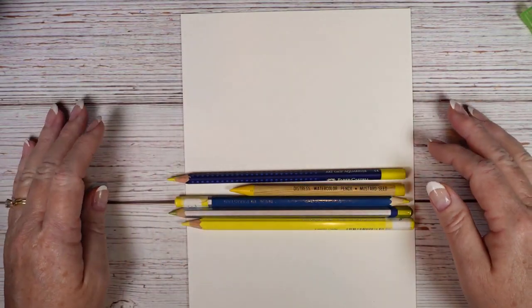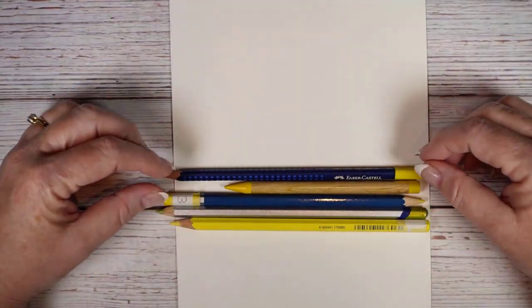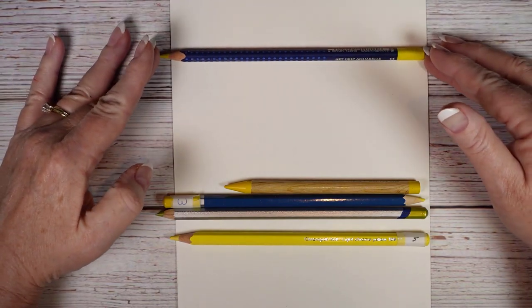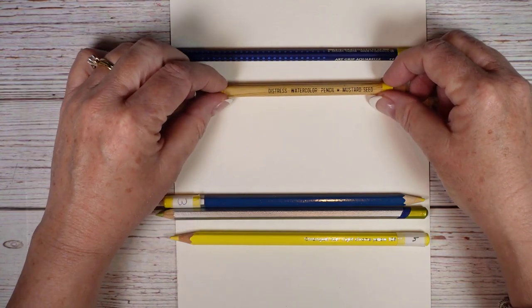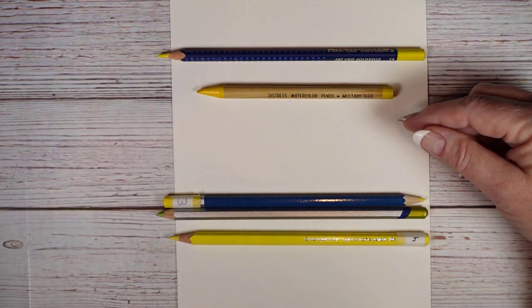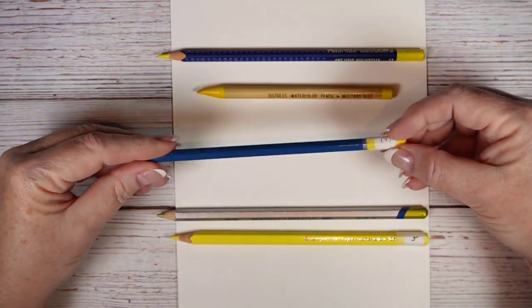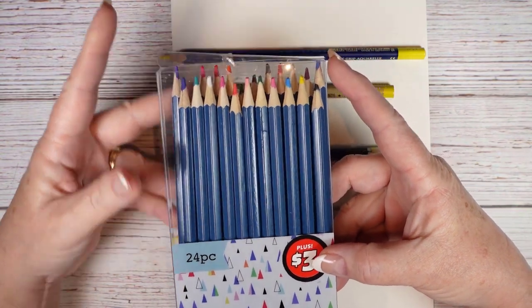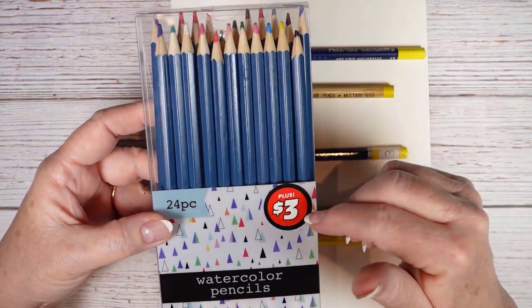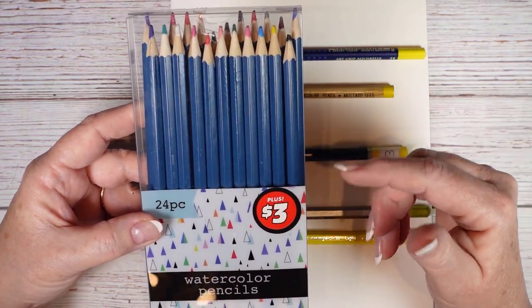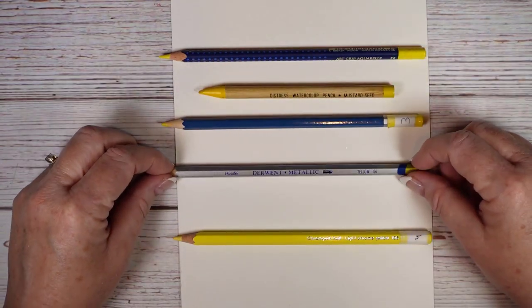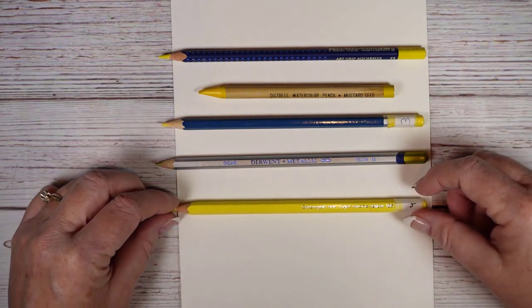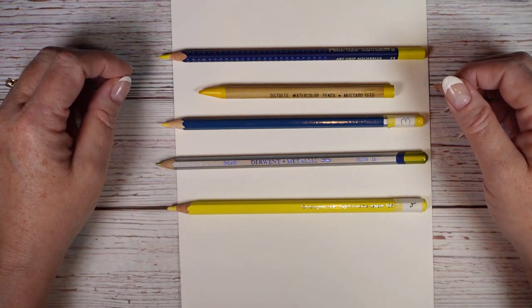First off I just have a few different colored pencils here. I have Faber-Castell's Aqua Grip Aquarelle, which is I believe their student grade watercolor pencil, I have Distress Watercolor Pencil in Mustard Seed from the Ranger Tim Holtz line. These are made in Pakistan and they are simply from the dollar store. I have some Derwent Metallic Watercolor Pencils and then I have Albrecht Durer, which is the artist grade line of colored pencils.